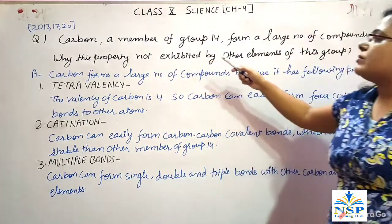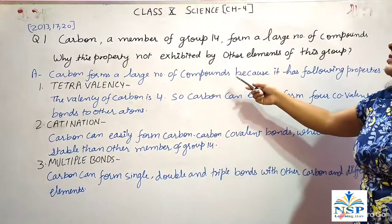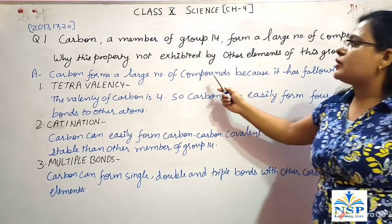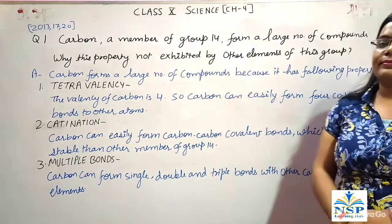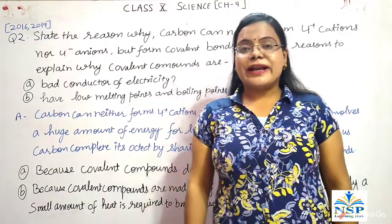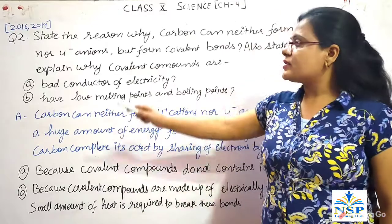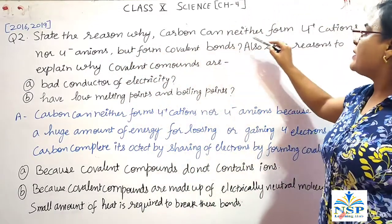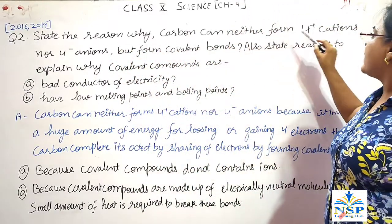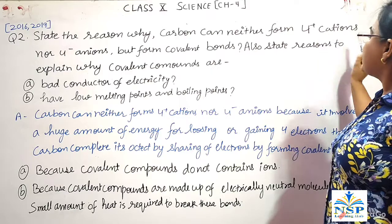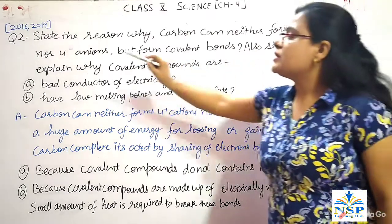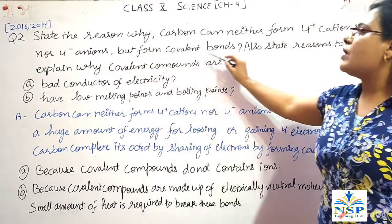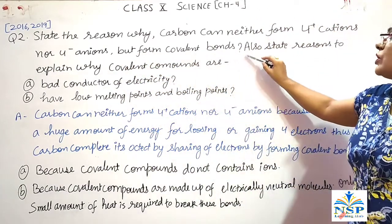So, Carbon forms a large number of compounds as compared to other elements of this group. Our next question is: State the reason why carbon compounds neither form 4+ cations nor 4− ions, but form covalent bonds.